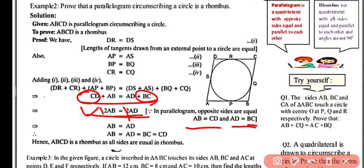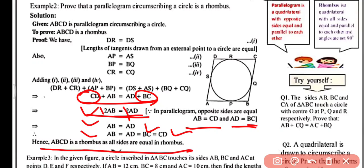Cancelling 2 from both sides gives AB equals AD. And since in a parallelogram AB equals BC (opposite sides), we get AB equals AD equals BC equals CD. If adjacent sides are equal in a parallelogram, then the parallelogram is a rhombus. Therefore ABCD is a rhombus — hence proved, as all sides are equal.